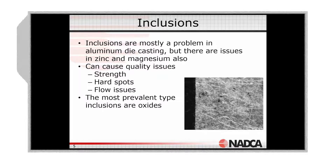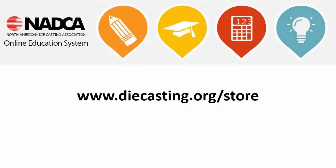Inclusions can cause problems with strength — they become extremely hard spots in the casting matrix in any of these alloys. They can also upset your flow; large inclusions or large pieces of material can come through the gate or combine in the casting and obstruct flow, leading to porosity concerns or other flow issues. The most prevalent inclusion is the oxide in the metal.